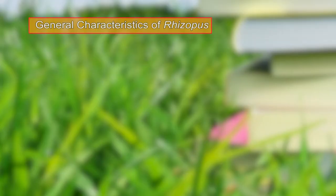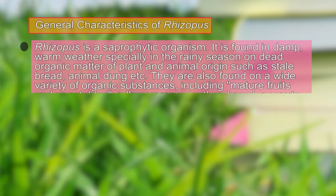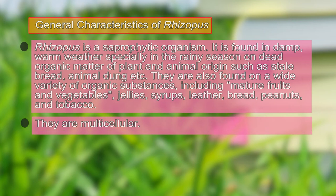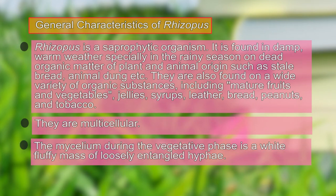Coming on to the general characters of Rhizopus, we find that it is a saprophytic fungus. It can grow on a variety of substrates including mature fruits, vegetables, jellies, syrups, leather, bread, tobacco, and peanuts — anything with organic matter is a substrate for Rhizopus. They are multicellular, and the mycelium during the vegetative phase is a white fluffy mass.